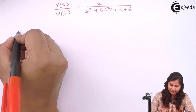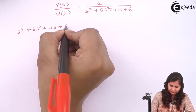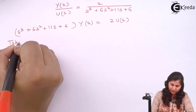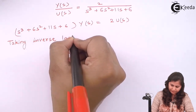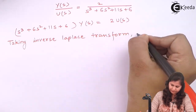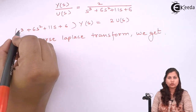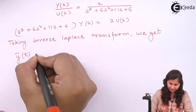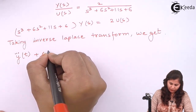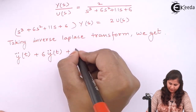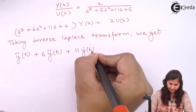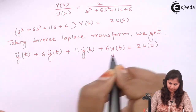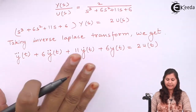Taking the inverse Laplace transform of both sides of the equation, since we have s³ that means differentiation of y three times, we get: ÿ(t) + 6ÿ(t) + 11ẏ(t) + 6y(t) = 2u(t). This is the differential equation representing the system.